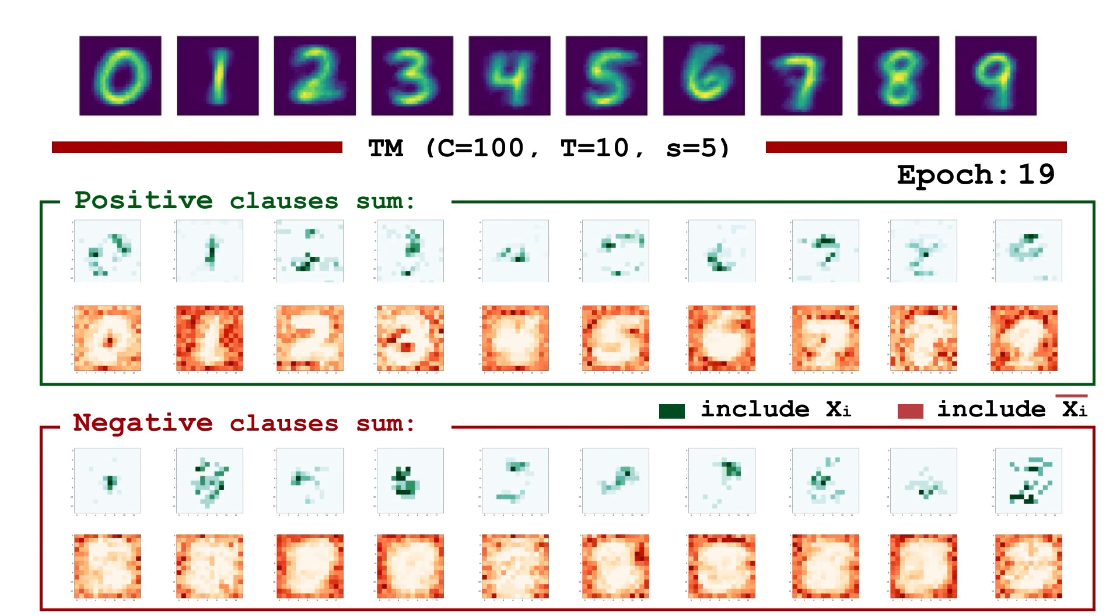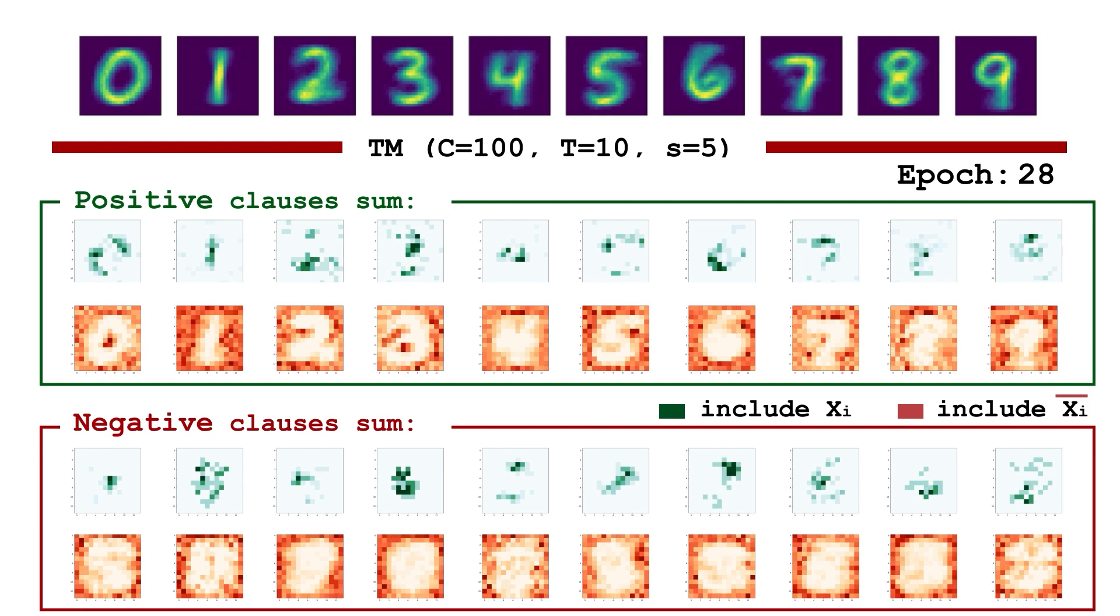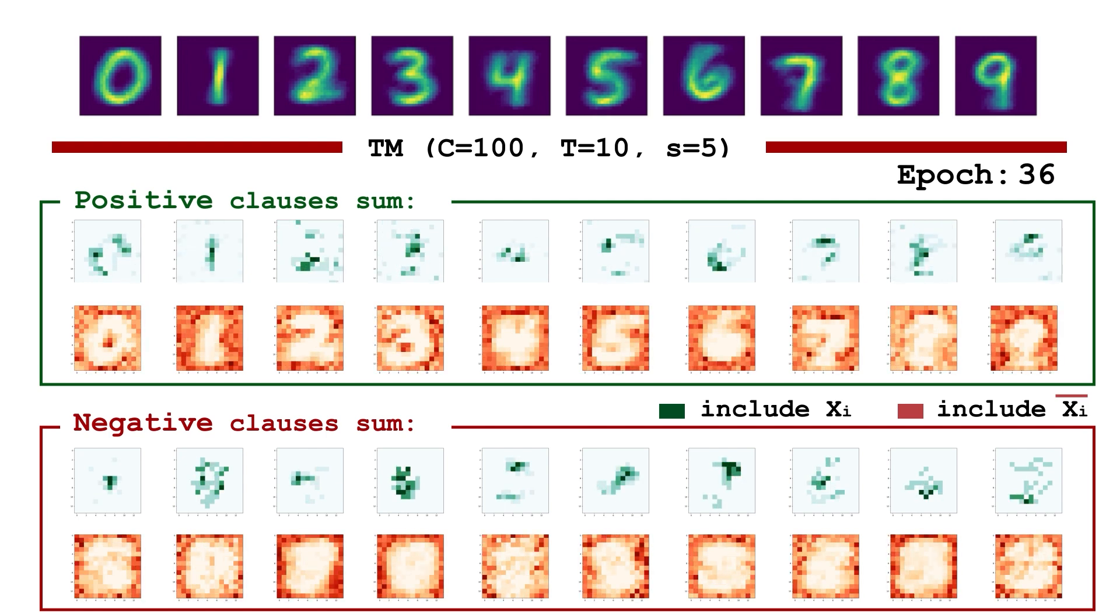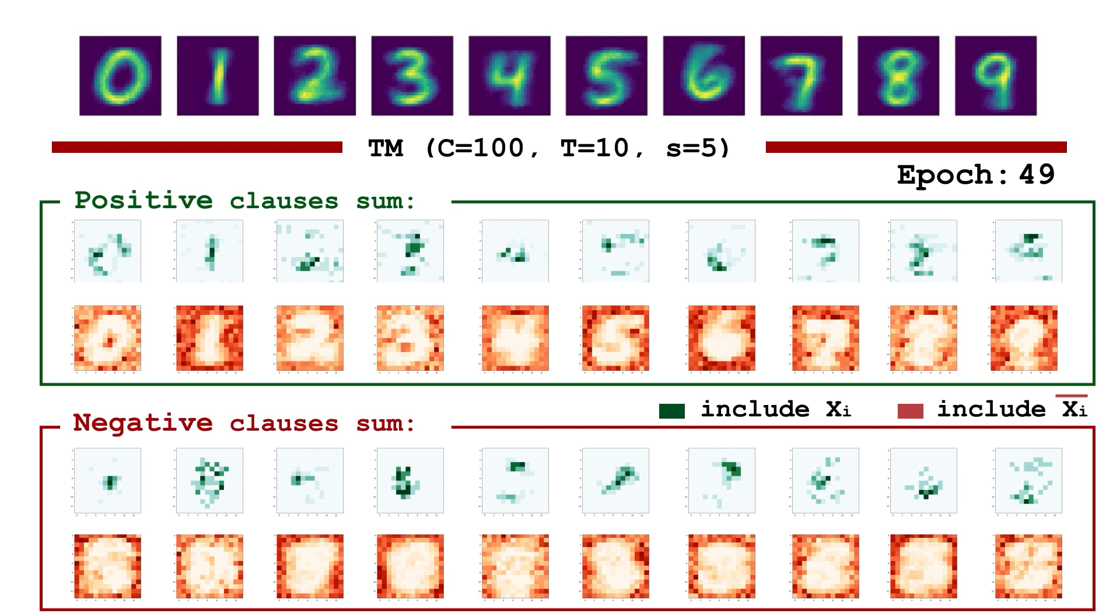During training, the aggregated positive clauses begin to increasingly resemble actual digits by capturing the most common features of their outline. Negative clauses aggregate the most common features of what is not a particular digit.